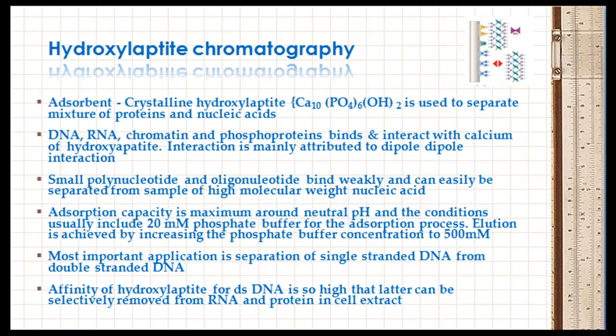Small polynucleotides and oligonucleotides bind weakly and can be easily separated from samples of high molecular weight nucleic acids. Hydroxyapatite is available commercially in a range of forms suitable for both low-performance and high-performance liquid chromatography, including crystalline or spherical hydroxyapatite and forms bonded to an agarose matrix. Adsorption capacity is maximum around neutral pH, and conditions usually include 20 mmolar phosphate buffer for the adsorption process.